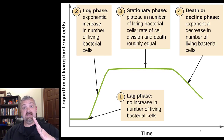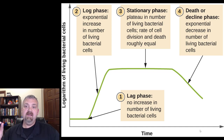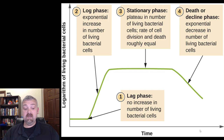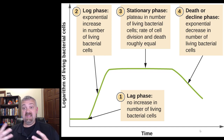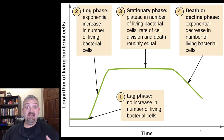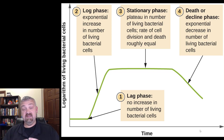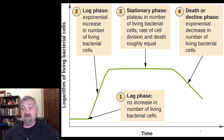Why doesn't the log phase continue? Why don't we get a pile of bacteria weighing 80,000 tons? Most of the time it's because we run out of space, or run out of food. The microbes spew waste products into the environment, making it toxic. Many of these metabolic waste products change the pH, keeping cells from growing at the same rate. That's the stationary phase — births now equal deaths.